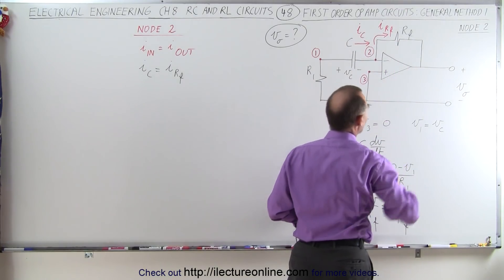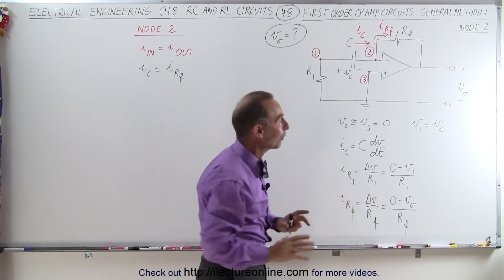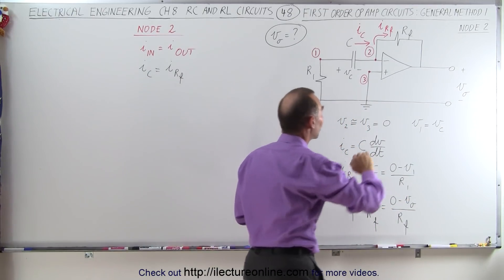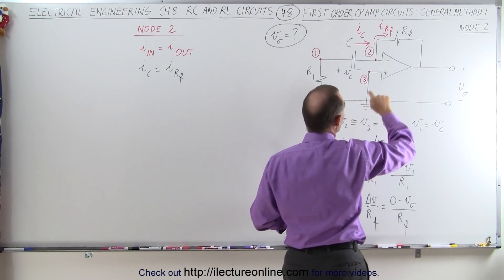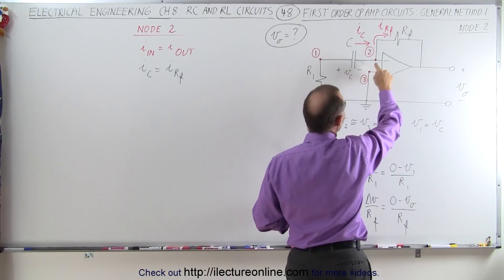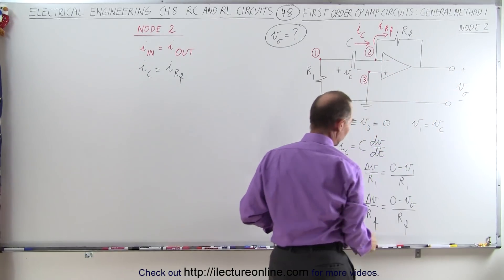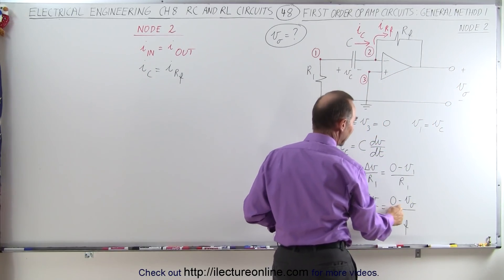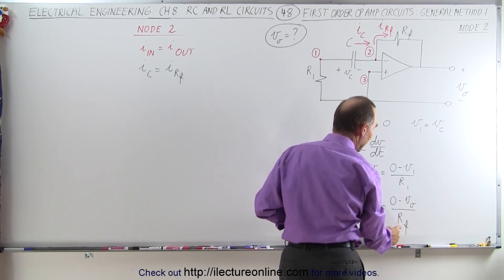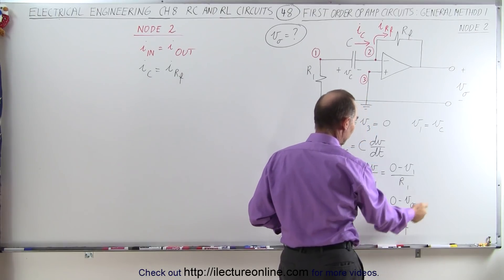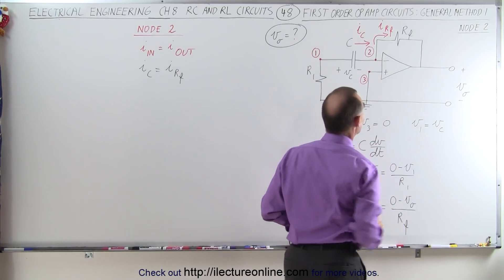Assuming the current is in that direction — that may not be correct, but we're going to assume the current is in that direction — so the difference in voltage is the initial voltage minus the final voltage. So we get 0 minus the output voltage divided by the feedback resistor to get the current as we have drawn it there.